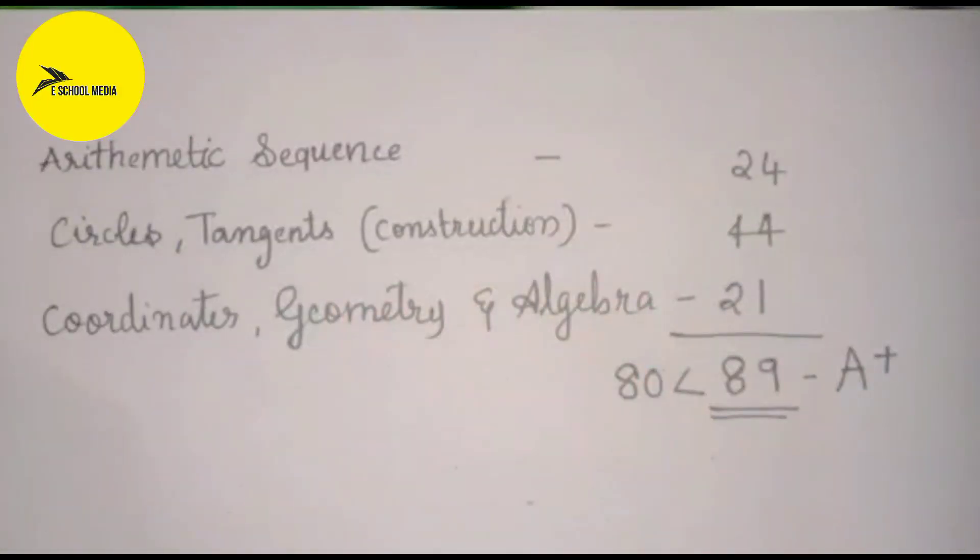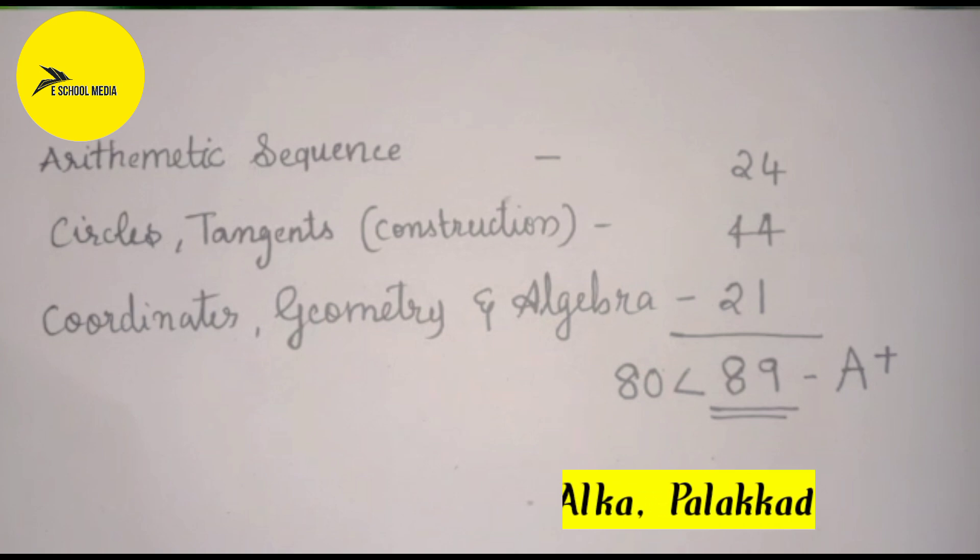Now we will talk about the Arithmetic and Algebra sequences. They use 24 marks: Circles and Tangents, Constructions. Then 44 marks: Coordinates, Geometry, and Algebra — this is 21 marks. For the 5 marks, you are ready to go to the cut marks.